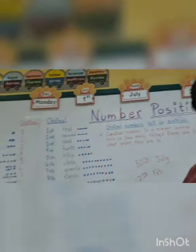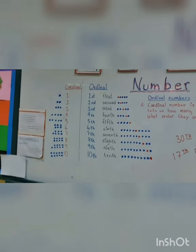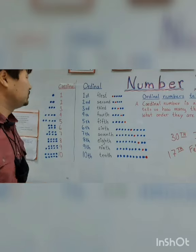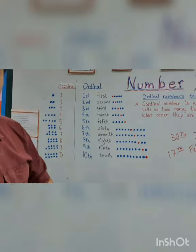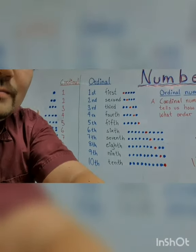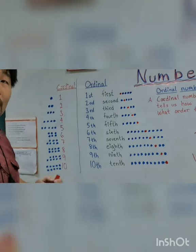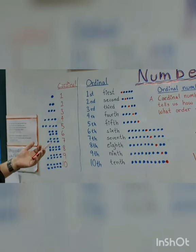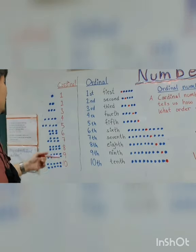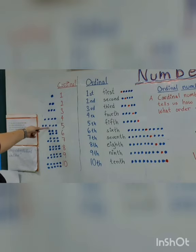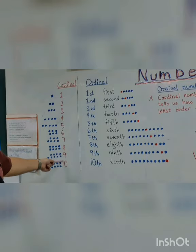Now I'm going to go into a little more detail explaining cardinal and ordinal numbers. Cardinal numbers, as I said — you count with them. They tell you how many things there are of whatever items. So: one, one dot; two, two dots; three, three dots; four, four dots; five, five dots; six, six dots; seven, seven dots; eight, eight dots; nine, nine dots; ten, ten dots.